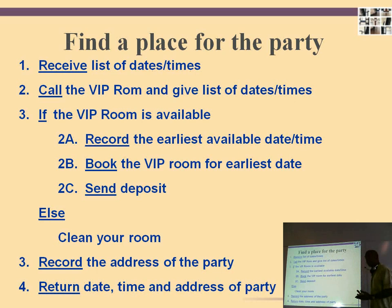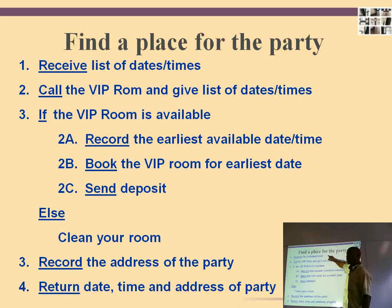We can see implicit in this algorithm that there is a piece of data that's input — dates and times for the party — and a piece of data that's output: the actual date of the party when it has been booked or not booked.